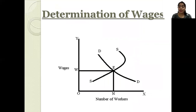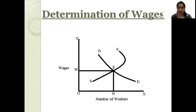Finally, we come to the determination of wages. According to the demand and supply theory of labor, wages are determined where the demand for labor and supply of labor are equal. On the OX axis we have the number of workers, and on OY, wages. DD is the demand curve and SS is the supply curve. The demand curve intersects the supply curve at point E, which is the equilibrium point. Here, the wage is OW and the number of workers demanded and supplied is ON. This is how we determine wages as per this theory. Thank you.